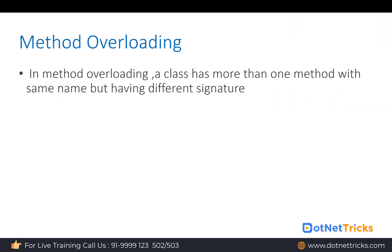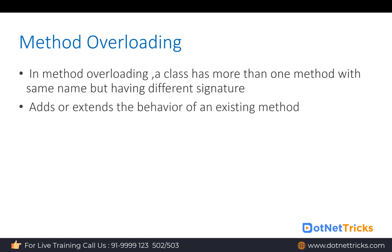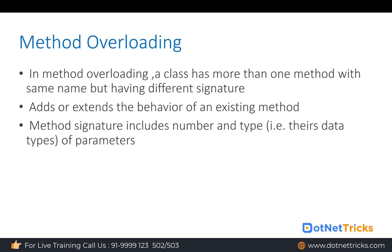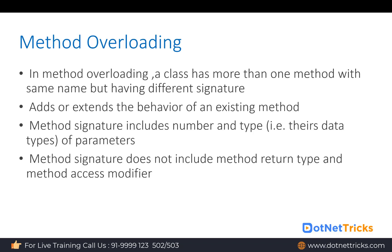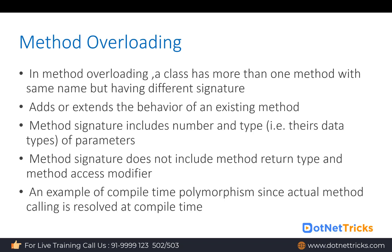Now let's understand method overloading and method overriding. In method overloading, a class has more than one method with the same name but different signatures. Method overloading happens within the same class and its objective is to add or extend the behavior of an existing method. The method signature includes number and type of parameters — it does not include return type or access modifier. Method overloading is an example of compile-time polymorphism, since the actual method call is resolved at compile time.